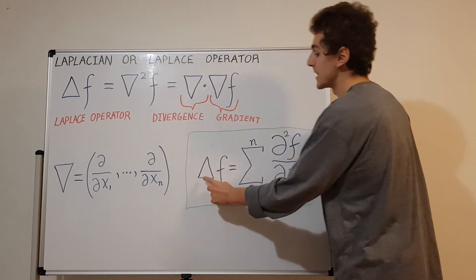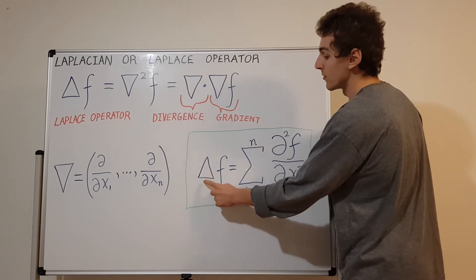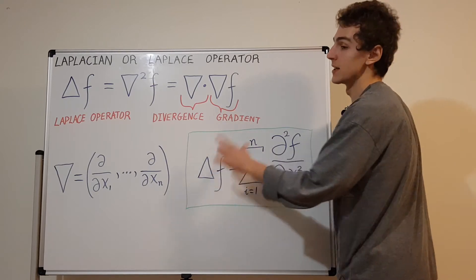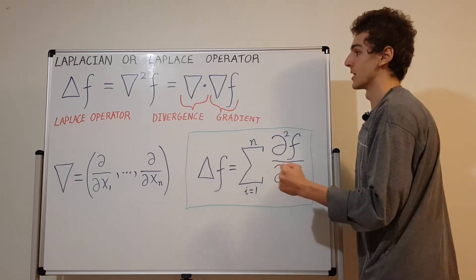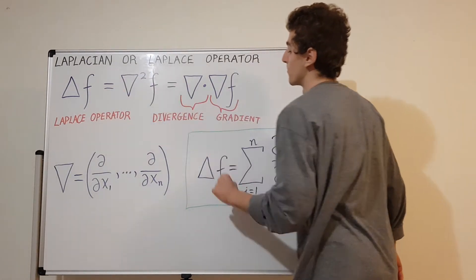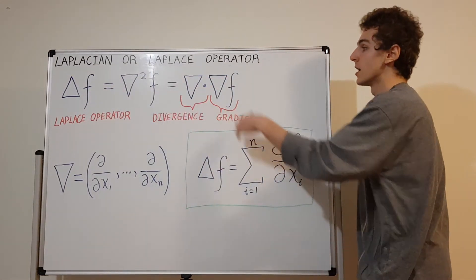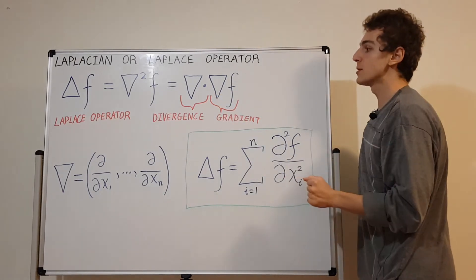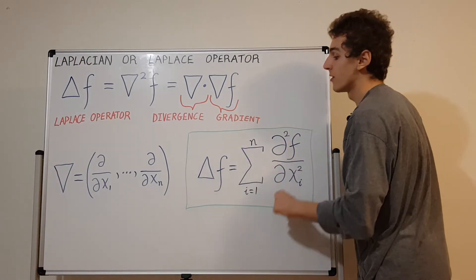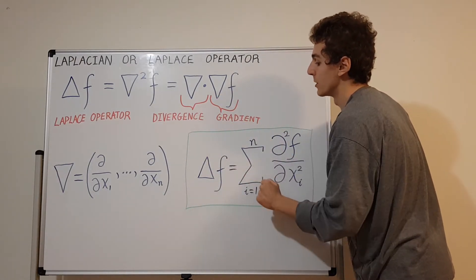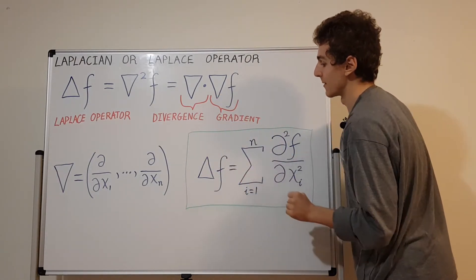The Laplacian is the sum of all the unmixed second-order derivatives of F. Both the delta notation and the nabla-squared notation are common and acceptable, as long as there is no ambiguity about the meaning.